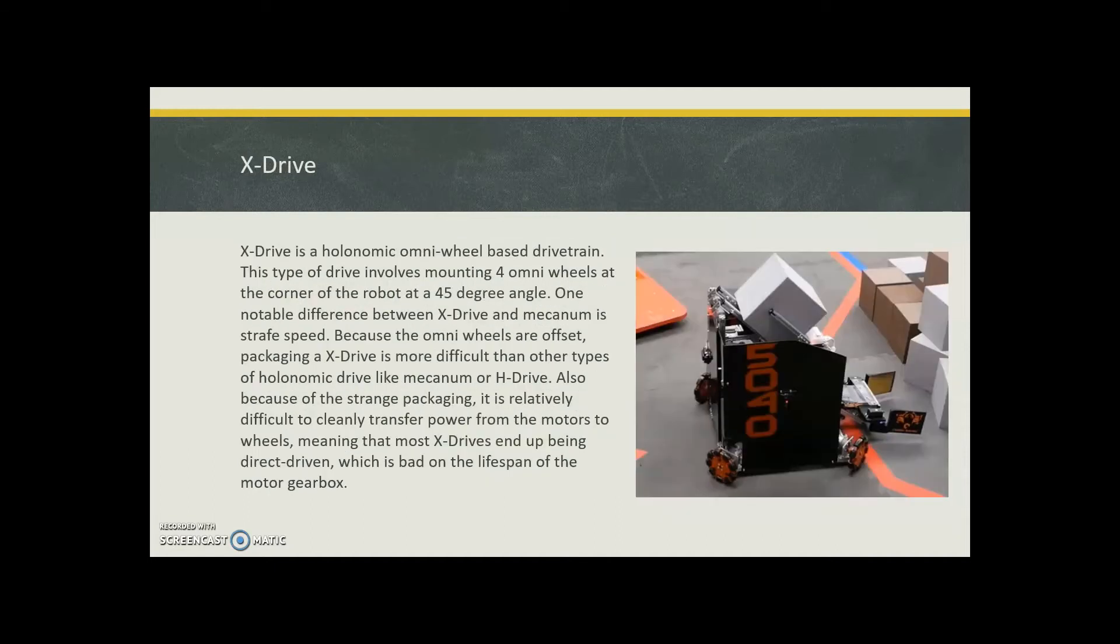X-Drive. X-Drive is a holonomic omni-wheel based drive train and it has four omni wheels in the corner of the robot at a 45 degree angle.